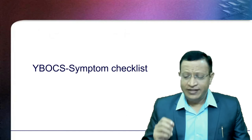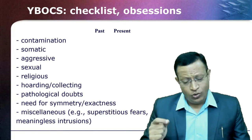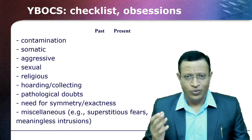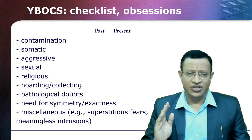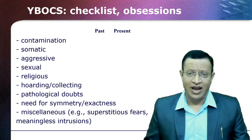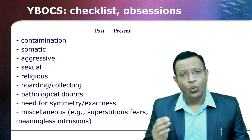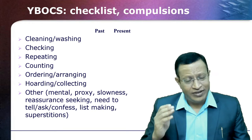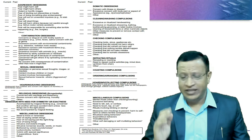Let's move into the checklist. The checklist for obsessions and compulsions is available. In the obsession section and compulsion section, you check whether symptoms are present in the past or present. Past is usually considered as more than one year or one month. You will look into the checklist of obsessions: whether it is contamination, somatic, aggressive, sexual — and you need to ask and give examples. Then many patients will be able to say, 'Yes, I had the symptoms one year back, five years back.' Similarly, for compulsions — whether it was in the past or present — you mark by asking whether it is there or not.